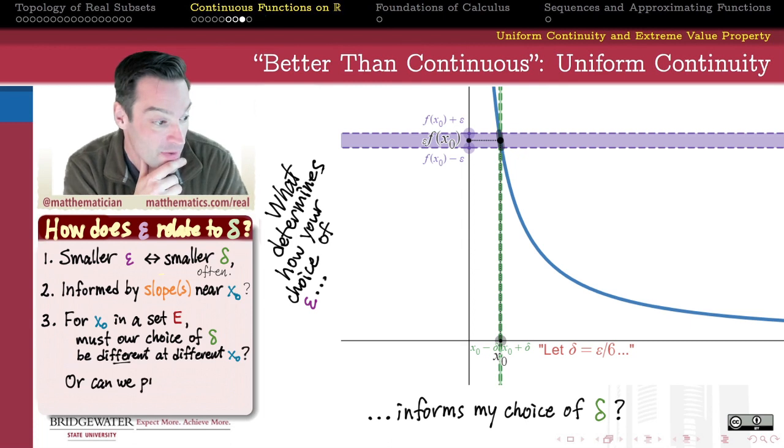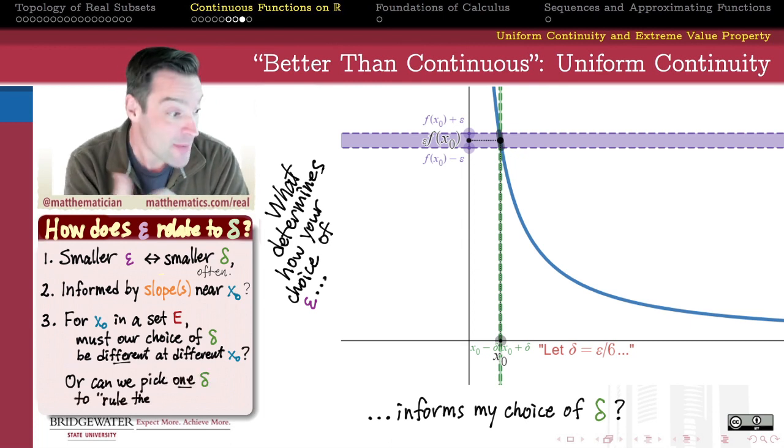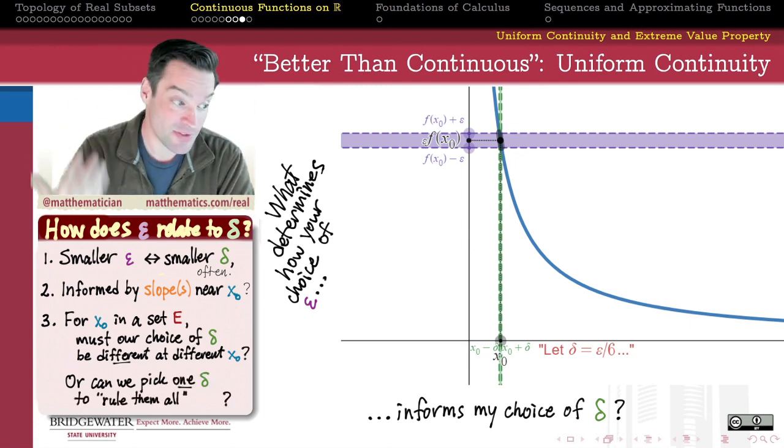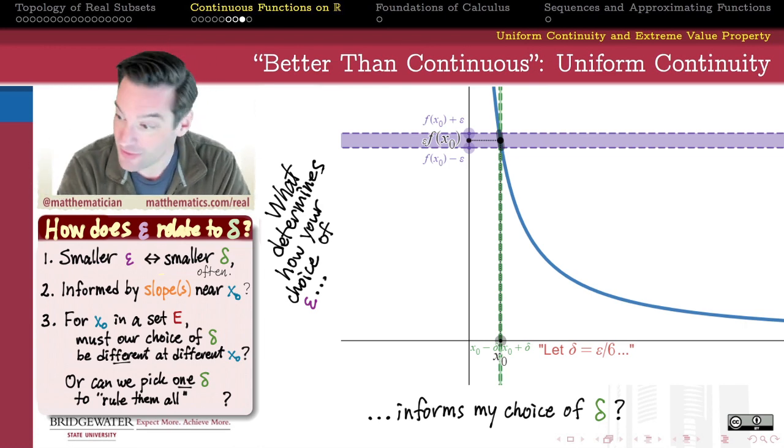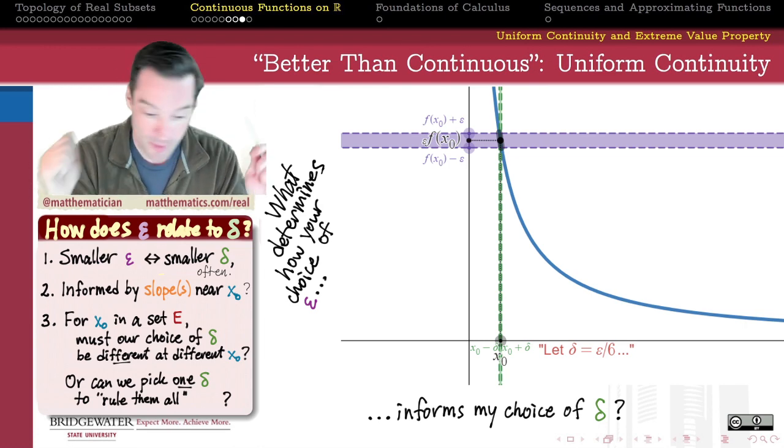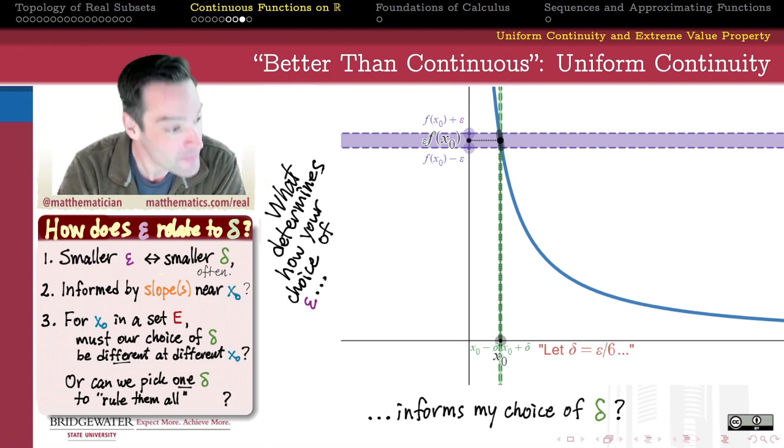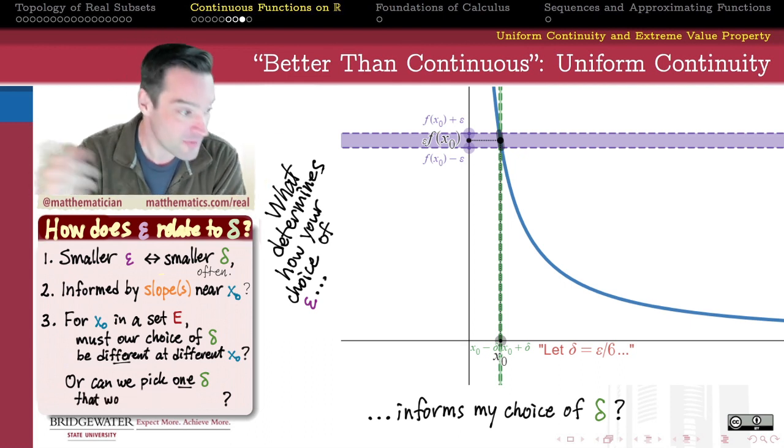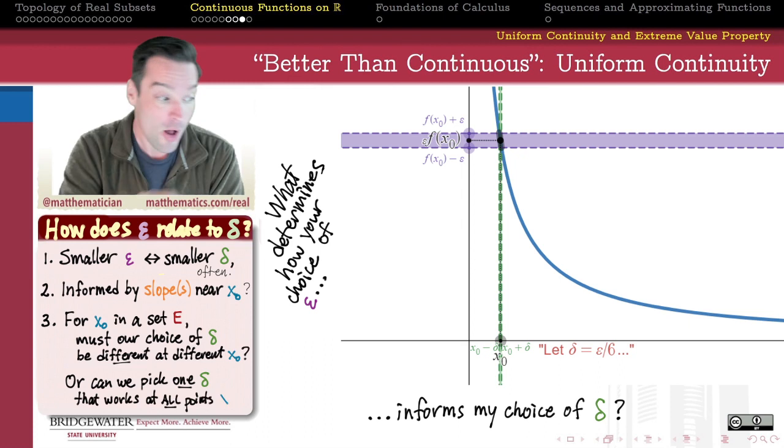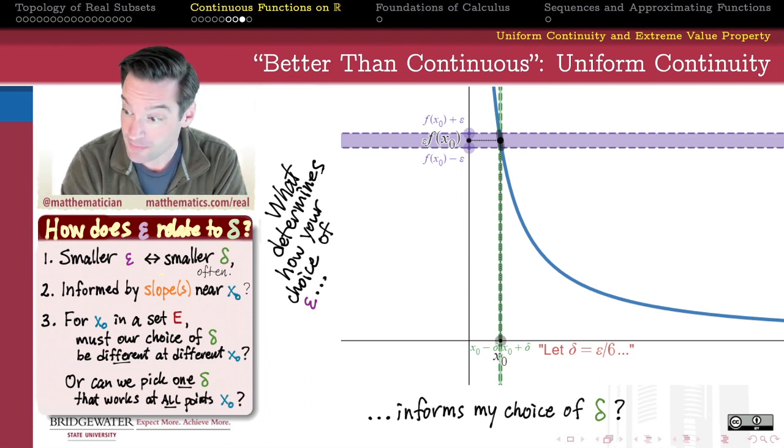On the other hand, we might, in principle, have functions where that's not the case. Where we might be able to pick a single value of delta to rule them all. One delta to rule them all. One delta to find them. One delta to bring them all and on the y-axis bind them. In other words, one value of delta that works for all points in the domain that I'm assessing.